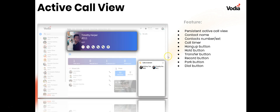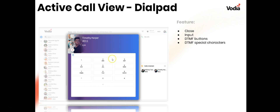Here's the active call view — you'll see the contact name, number or extension, and a call timer. You have hang up, hold, transfer, record, park, and a dial button to bring up the dial pad. The dial pad lets you input DTMF digits, includes special characters, and can be closed when not needed.